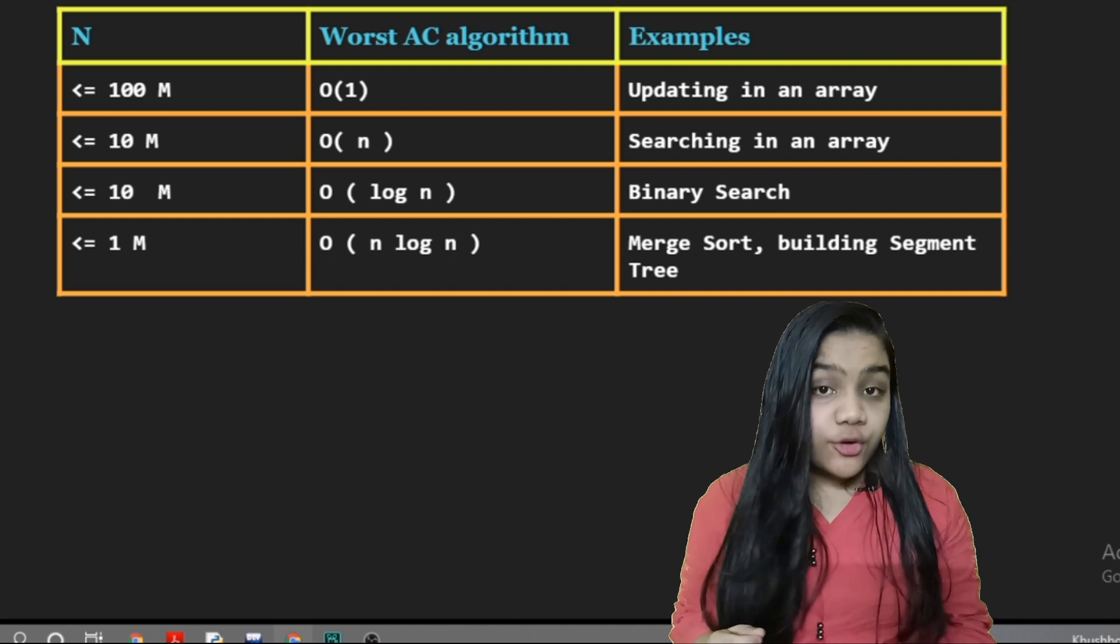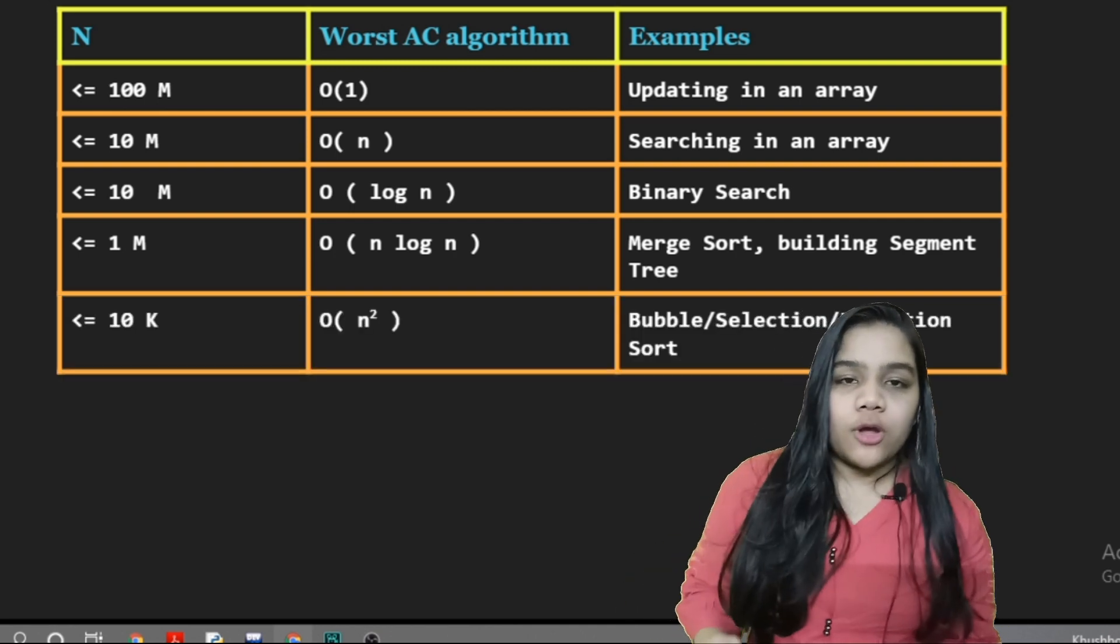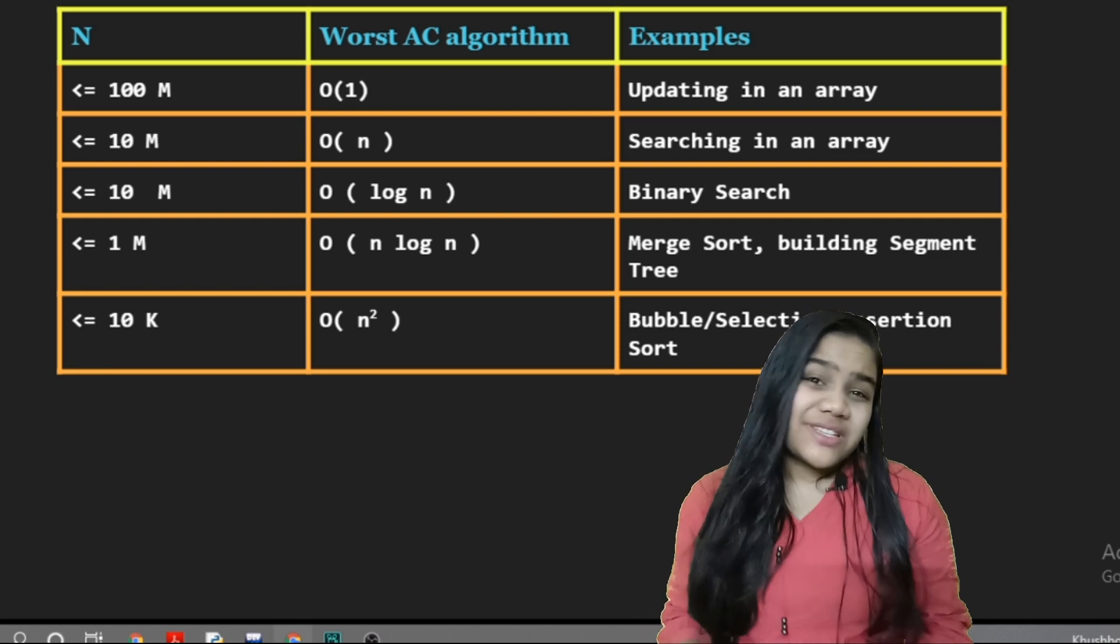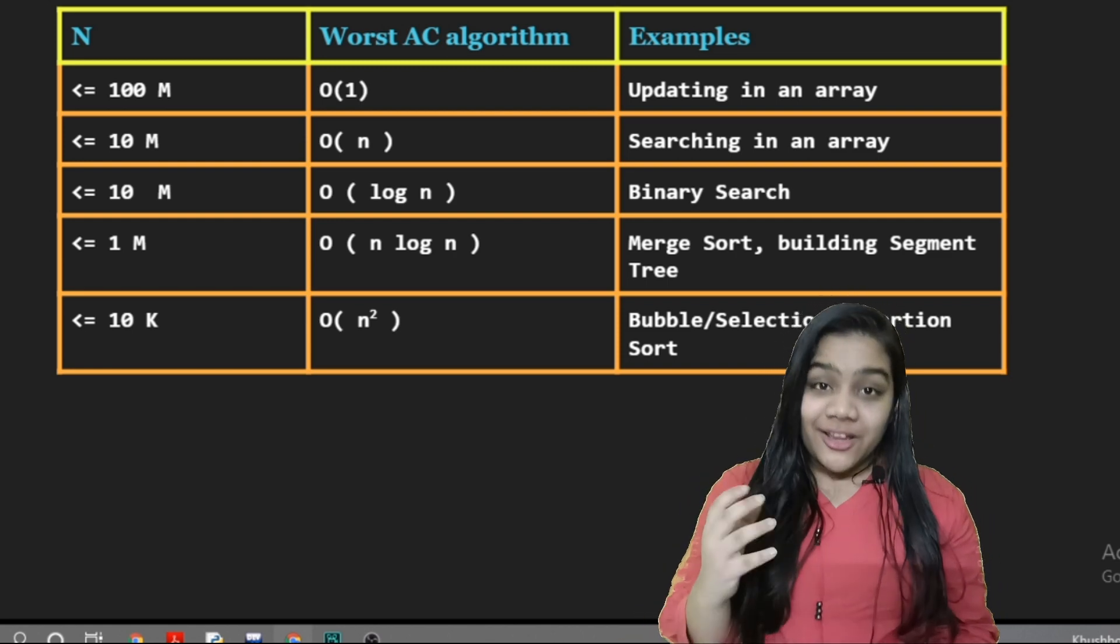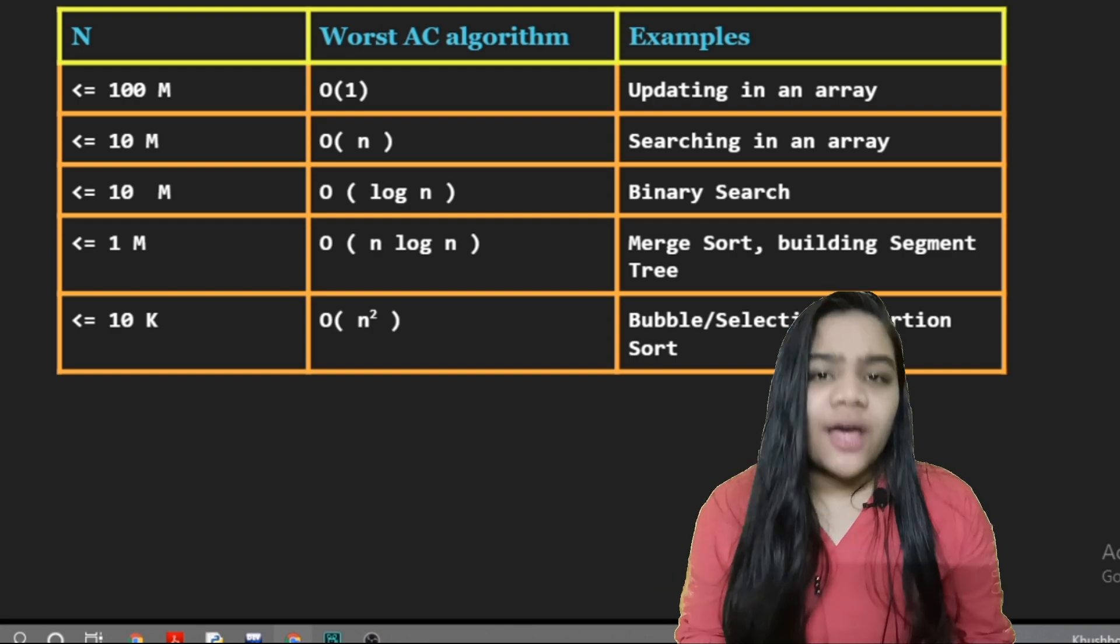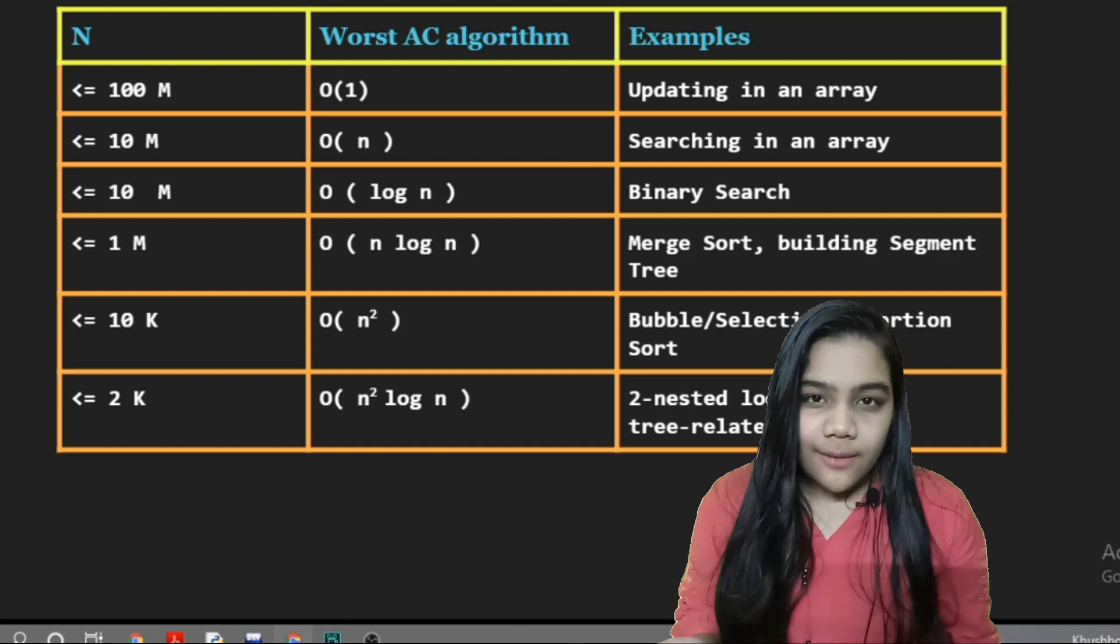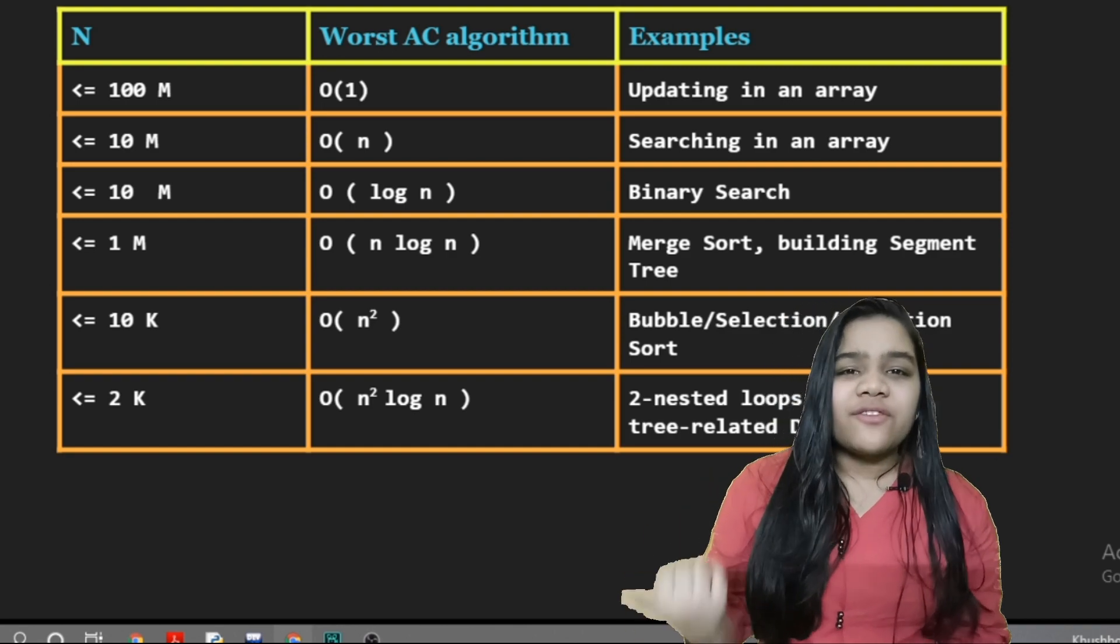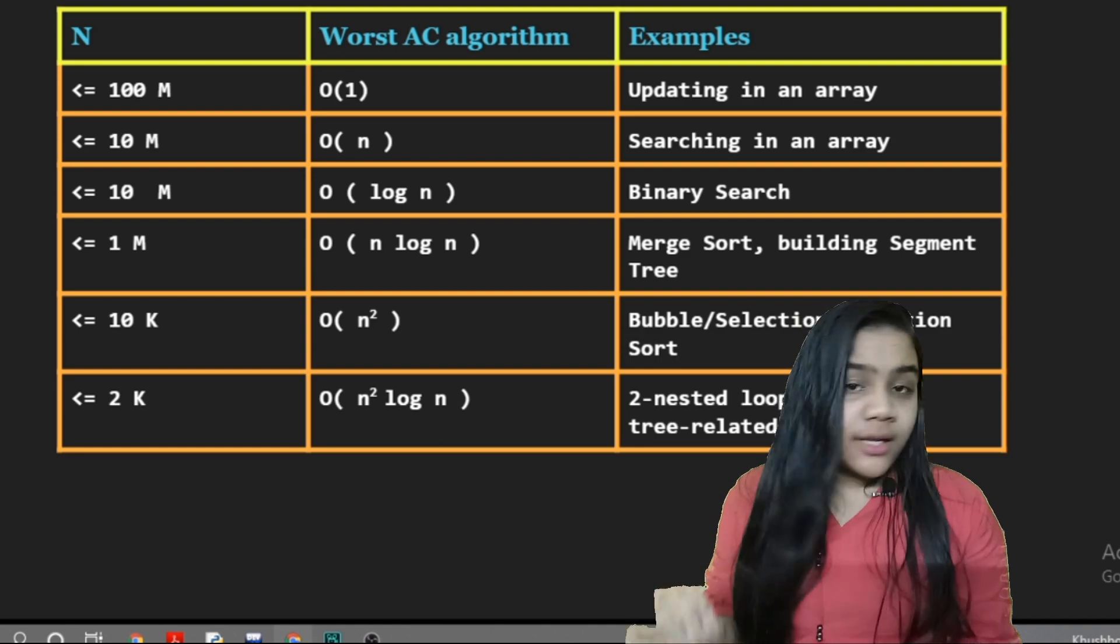If we have the input range less than or equal to 10,000, then we can have n square like performing merge sort or selection sort or maybe an insertion sort. Or if we have the input range less than 2000, then we can perform the time complexity up to n square log n. So we can have two nested loops maybe or plus any tree related data structure.